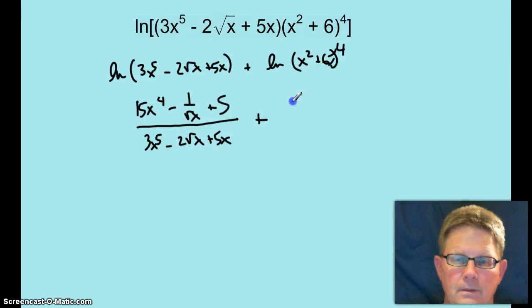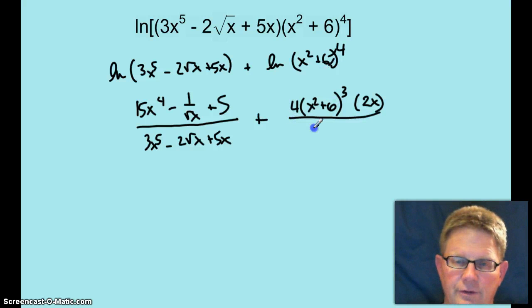The derivative of this is going to be 4 times x squared plus 6 raised to the 3rd power, multiplied by the derivative of the stuff inside 2x, chain rule, and then x squared plus 6 raised to the 4th power.